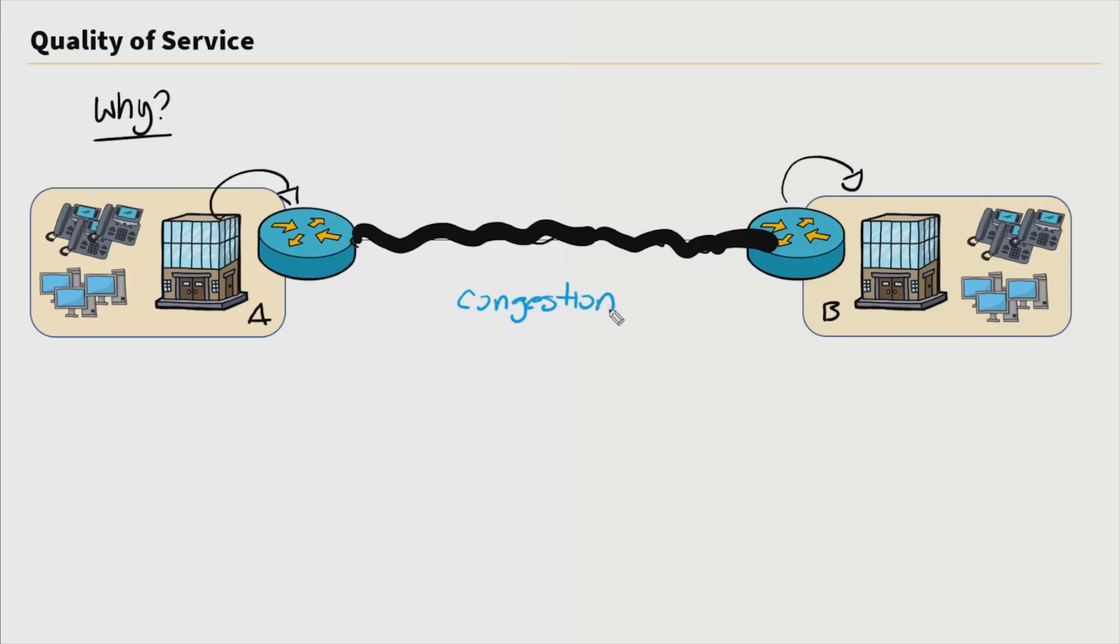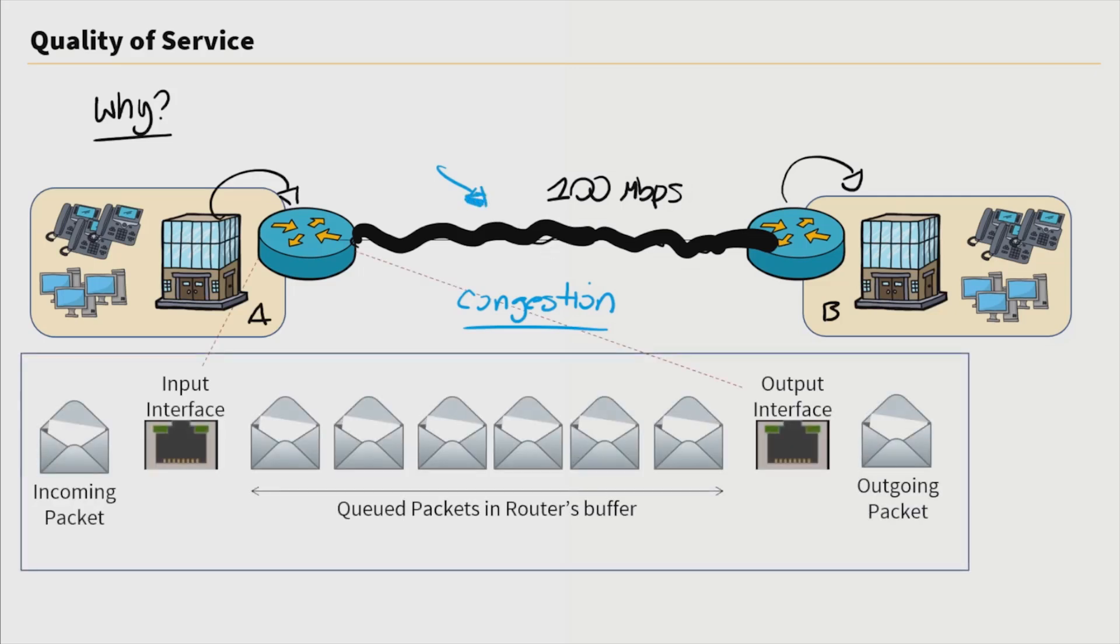So why is it that we need quality of service? Let's take these two sites, site A and site B, and we have data that goes over the wide area network, and that data goes over that WAN and eventually reaches site B. But what if we have so much data that we're experiencing congestion? With congestion, the demand for bandwidth exceeds the amount of total available bandwidth. Let's say the bandwidth available on this WAN link is 100 megabits per second. Then due to the amount of data being transferred between both sites, this WAN link is being saturated. So there's little to no bandwidth available.